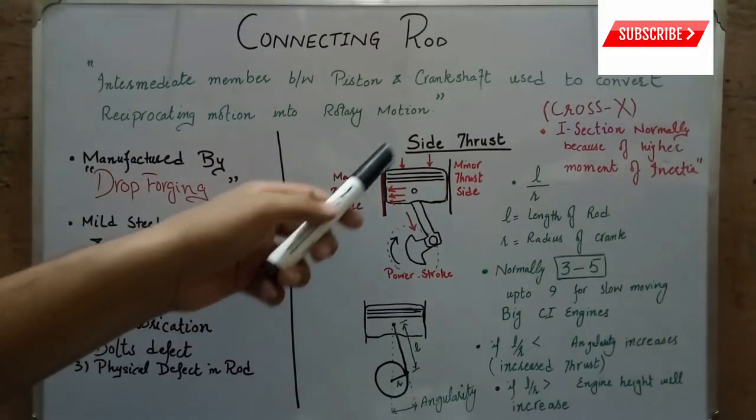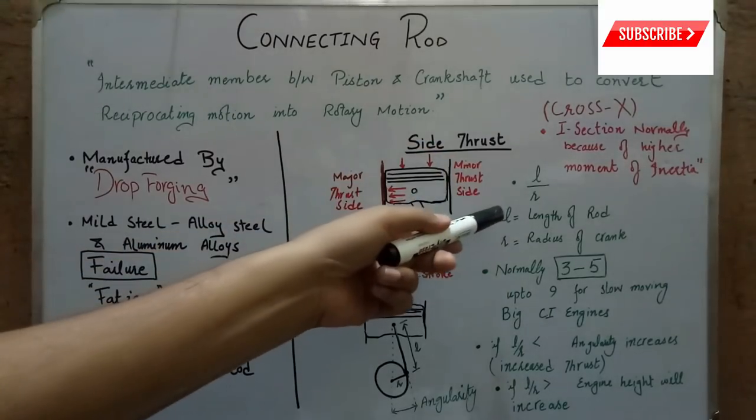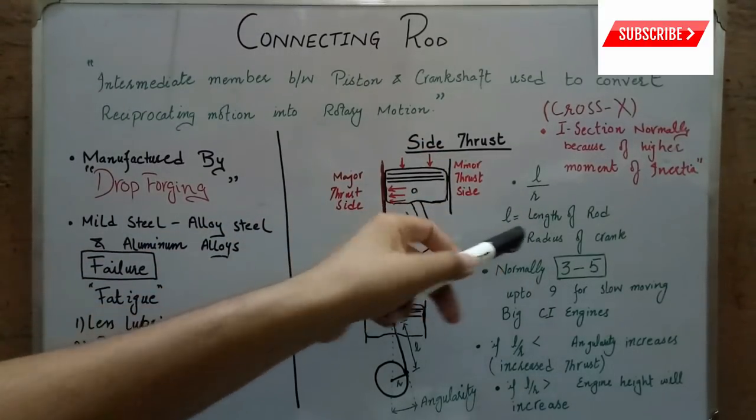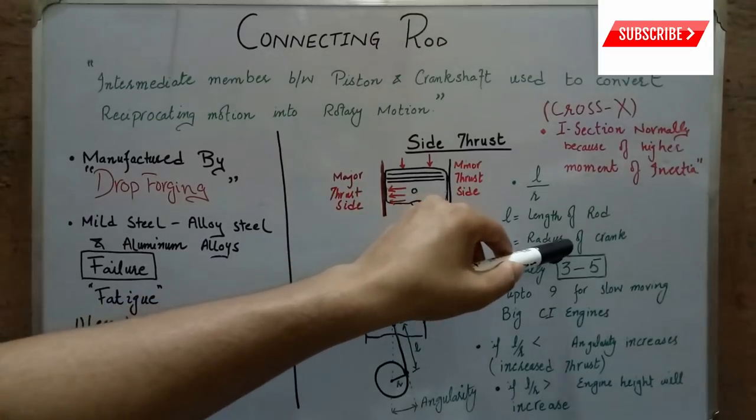This side thrust depends upon the L over R ratio, where L is the length of the connecting rod and R is the radius of the crank.